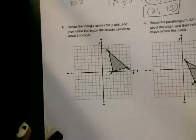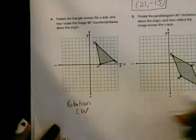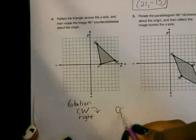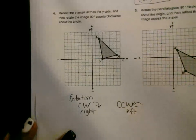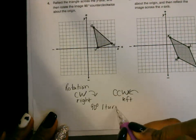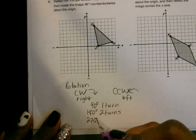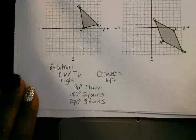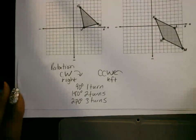We're rotating. When you do a rotation you're either going to rotate clockwise — that's to the right — or counterclockwise, CCW, which is to the left. The number of turns: 90 degrees is one turn, 180 degrees is two turns, and 270 degrees is three turns. A 360 is four turns but it's going to look like it didn't even move, so you rarely see that.